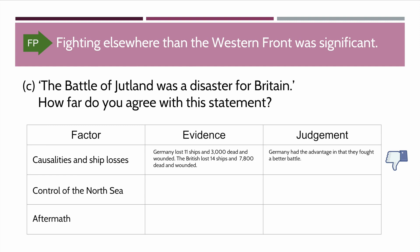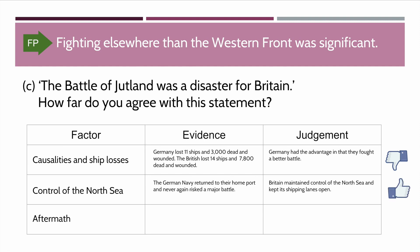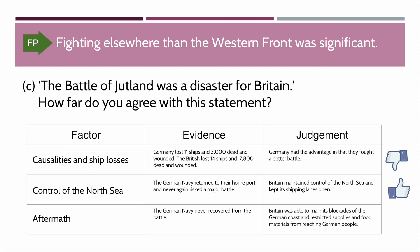But there's more evidence to consider. Let's look at the control of the North Sea. The German Navy returned to their home port and never again risked a major battle. Judgment: Britain maintained control of the North Sea and kept its shipping lanes open — that sounds more positive to the British, so thumbs up. And then finally, the aftermath of the Battle of Jutland: the German Navy never recovered from the battle. Judgment: Britain was able to maintain its blockades of the German coast and restricted supplies and food materials from reaching the German people. That's very positive for the British — thumbs up.